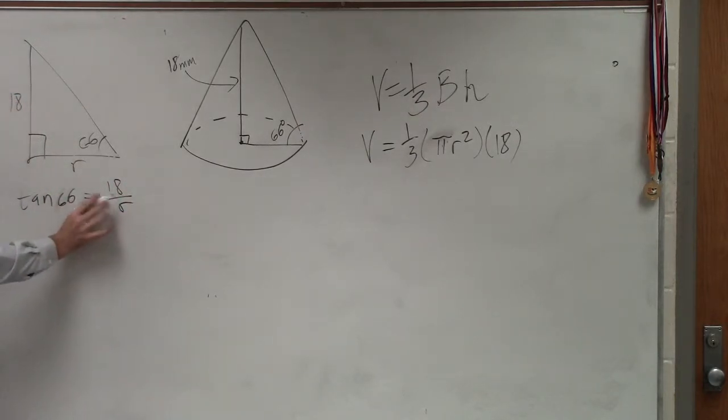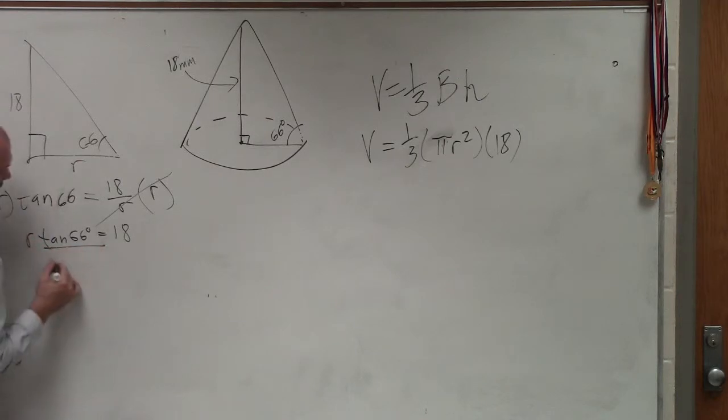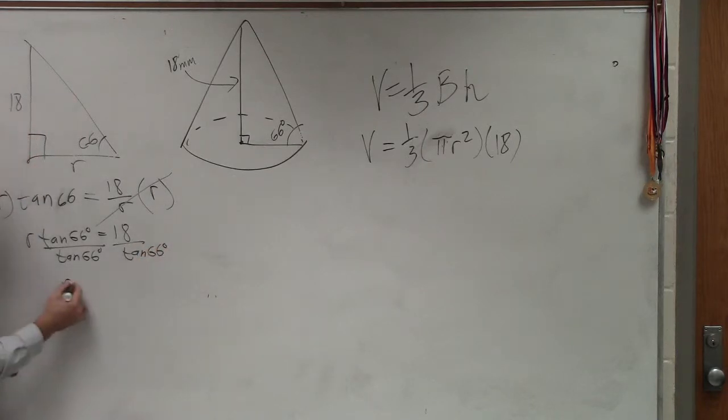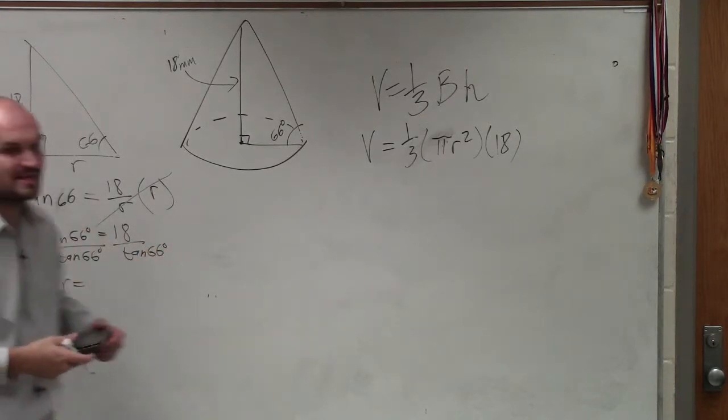Now I need to solve for r. So to get r off the bottom, I multiply by r on both sides. Therefore, now I'm left with r times the tangent of 66 degrees equals 18. To solve for r, tangent of 66 degrees. So therefore, r equals 18 divided by tangent of 66.